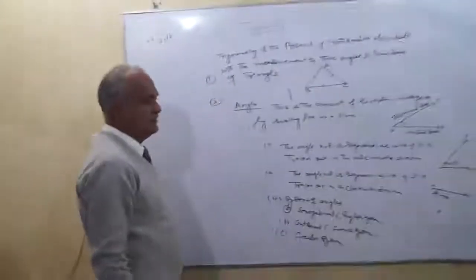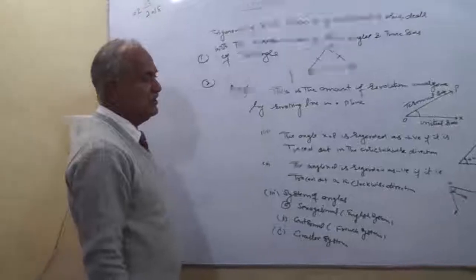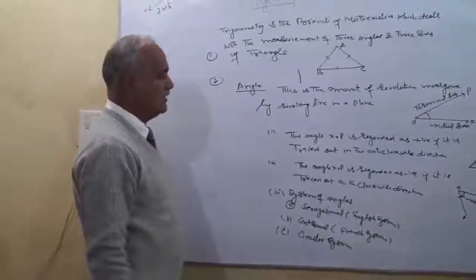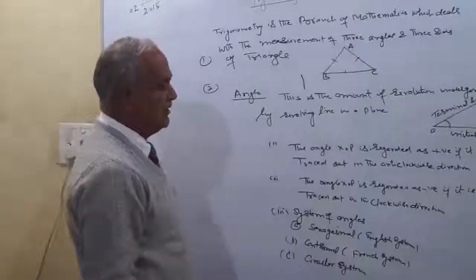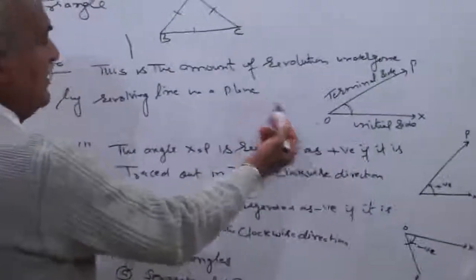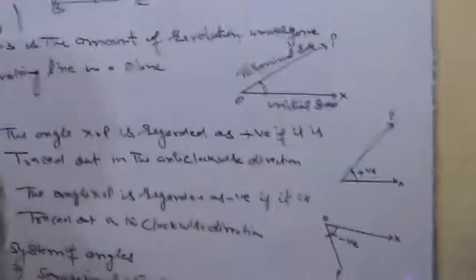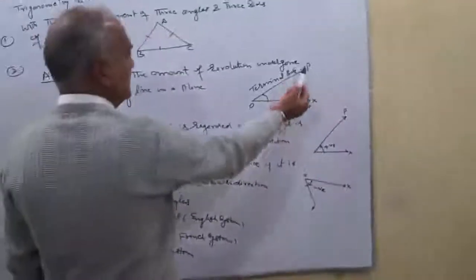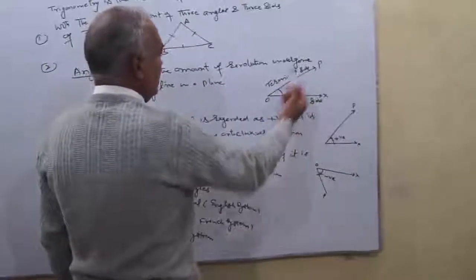What is angle? This is the amount of revolution undergone by a revolving line in a plane. Here OX is your initial side and OP is your terminal side. Then XOP is your angle.